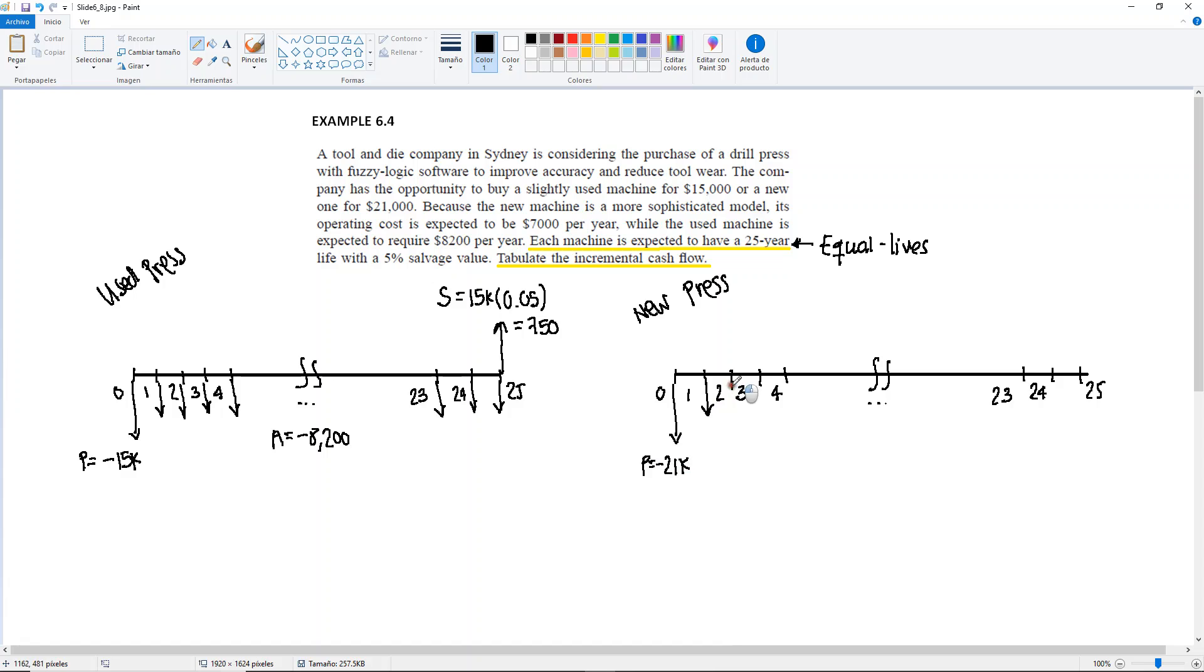I have my A every year. For here, the A is going to be minus $7,000. And the salvage value is going to be 5% of $21,000, which is equal to $1,050. So I have my two diagrams here. It's useful if you draw the diagrams, because that's going to make filling out the cash flow table easier.